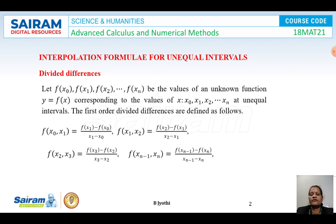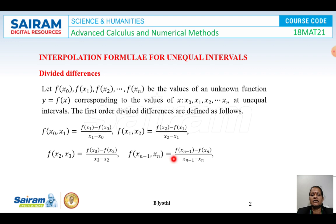So, divided difference: let f(x₀), f(x₁), f(x₂), etc., f(xₙ) be the values of an unknown function y = f(x) corresponding to the values x = x₀, x₁, etc., xₙ at unequal intervals. The first order divided differences are defined as follows: f(x₀, x₁) = [f(x₁) − f(x₀)] / (x₁ − x₀). Similarly, f(x₁, x₂) = [f(x₂) − f(x₁)] / (x₂ − x₁), and f(x₂, x₃) = [f(x₃) − f(x₂)] / (x₃ − x₂). And f(xₙ₋₁, xₙ) = [f(xₙ) − f(xₙ₋₁)] / (xₙ − xₙ₋₁). These are all the first order divided differences.